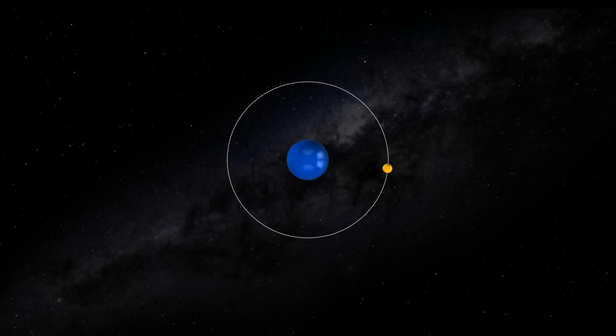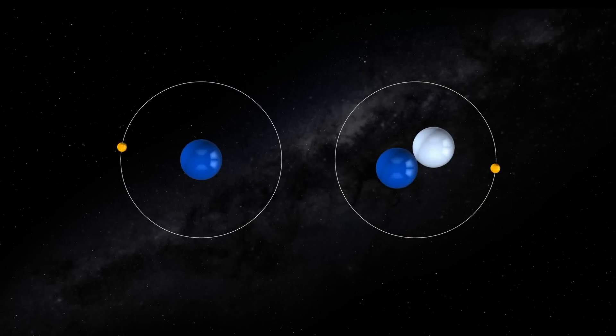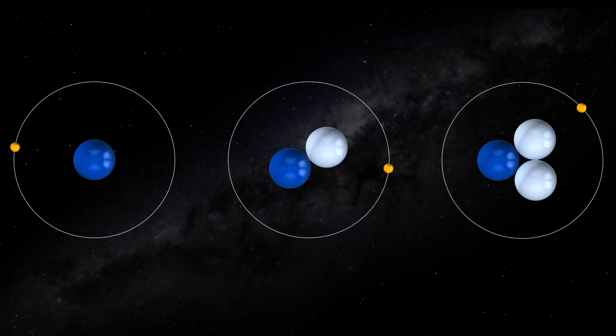Hydrogen is an element with one proton and one electron. Isotopes of hydrogen include heavy hydrogen with one proton and one neutron, and tritium with one proton and two neutrons.